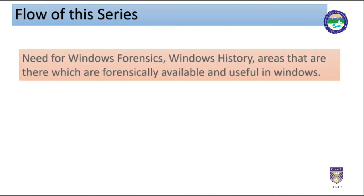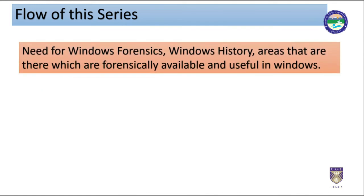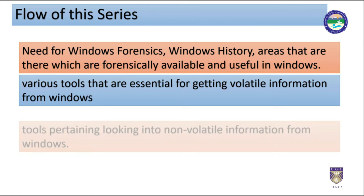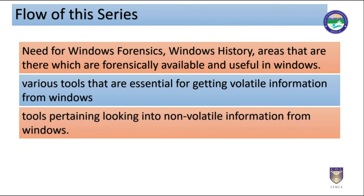Friends, in this video series, firstly in Part 1, we will see the need for Windows forensics, Windows history, and the areas that are forensically available and useful in Windows. Then secondly, in Part 2, we will delve shortly into various tools that are essential for getting volatile information from Windows. Thirdly, in Part 3, we will visit tools pertaining to looking into non-volatile information from Windows.